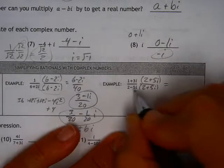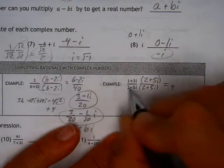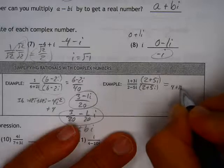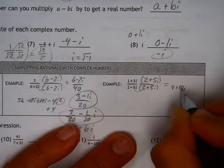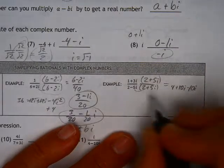So, foiling, I get a 4. The outer gives me a plus 10i. The inner then gives me a minus 10i. That goes away as normal.